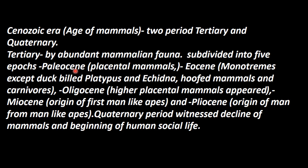In the Paleocene, placental mammals appeared. Placental mammals are those in which the fetus develops inside the mother with blood circulation and nutrient supply through the placenta. The placenta is the connecting part between the mother and the embryo.